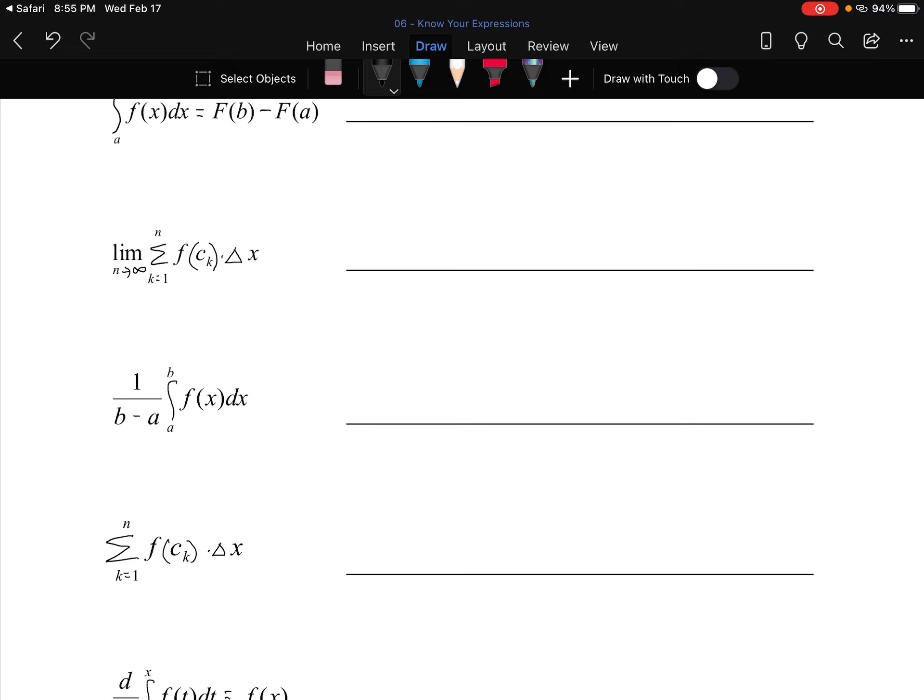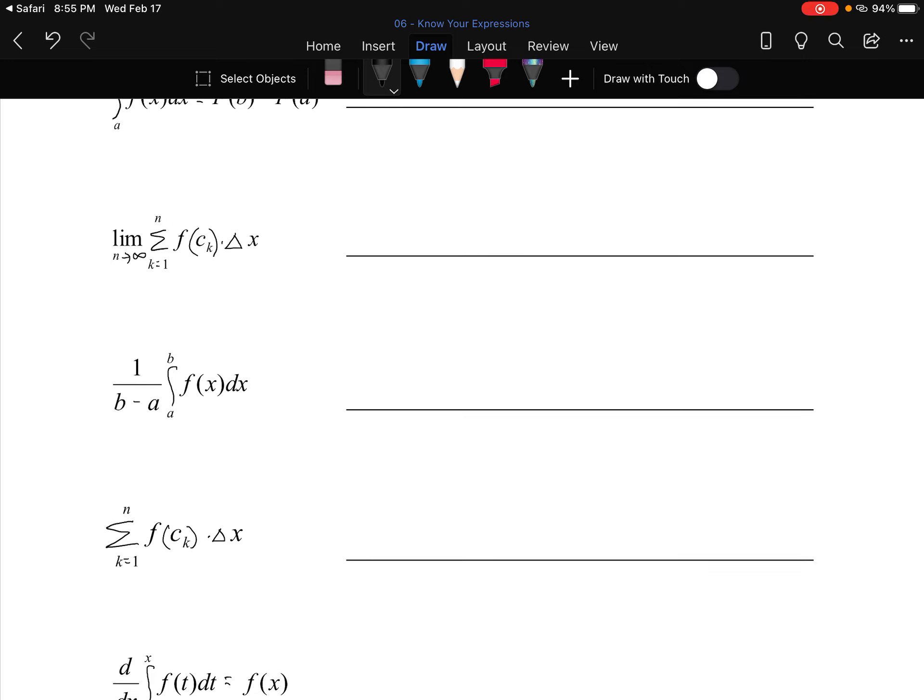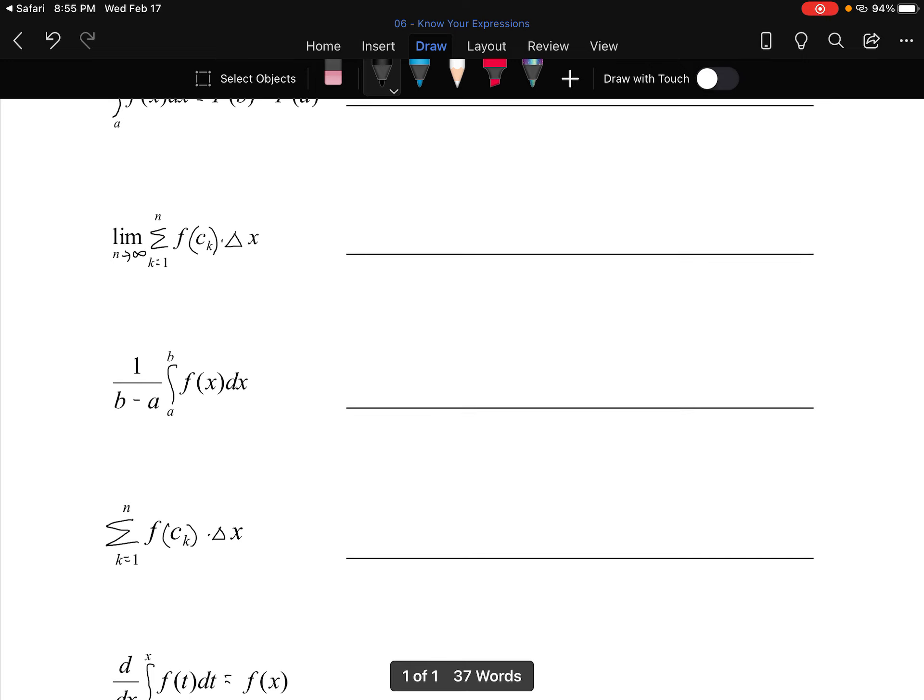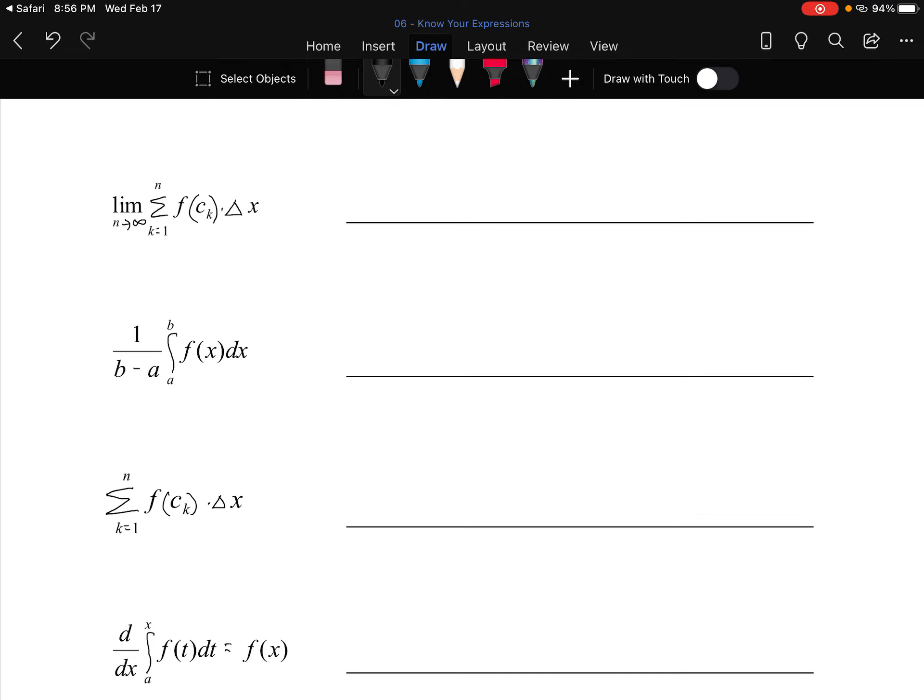Then we've got one over b minus a, integral a to b of f(x)dx. And then there's one that looks a lot like the second one—it says summation k equals one to n, f(c_k) dotted with delta x, but it doesn't have the limit out there in front.